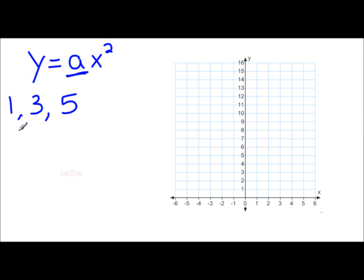So for example, let's look at the relation y equals 2x squared. The step pattern for y equals x squared is 1, 3, 5. And we're now going to multiply each one of those values by our a, which in this case is 2.